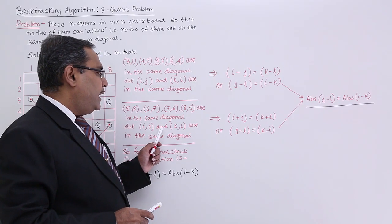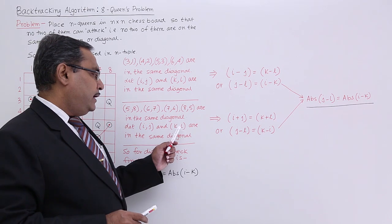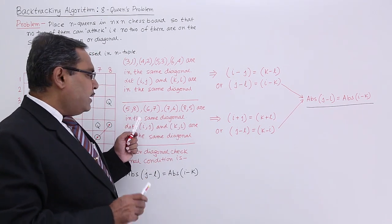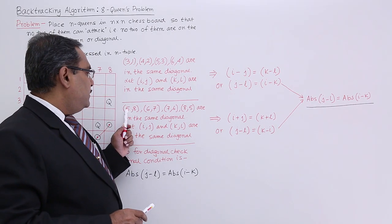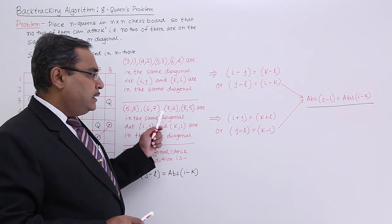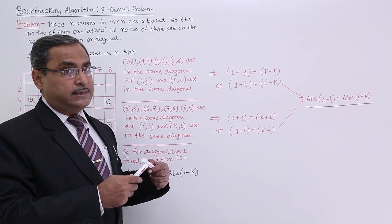I am considering i and j and k and l are in the same diagonal. i and j or k and l can be any one of them. Now, see here I am getting one logic. The logic here is that 5 plus 8 is 13, 6 plus 7 is 13, 7 plus 6 is 13 and 8 plus 5 is 13. So their sums are equal.